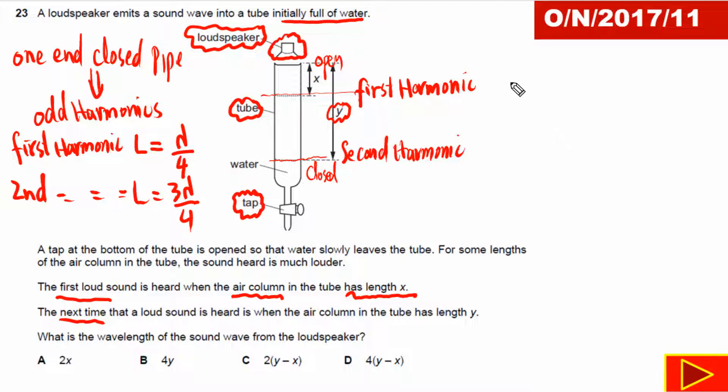For this question it is given to us first harmonic is heard when x, the length of air column is equal to x, so we can simply say x is equal to lambda by 4. And the second harmonic is heard when y, the length of air column is equal to y, simply we can say that is 3 lambda by 4.